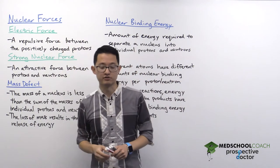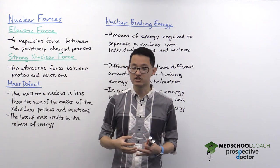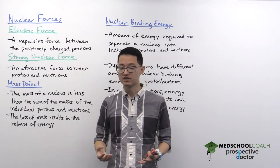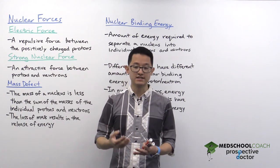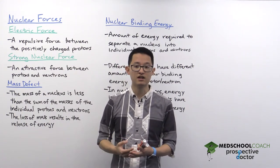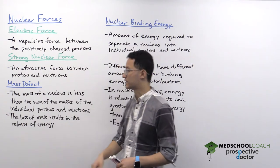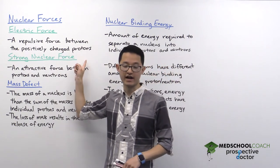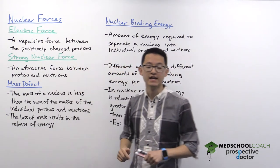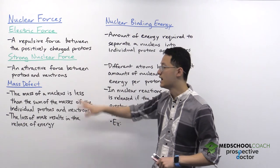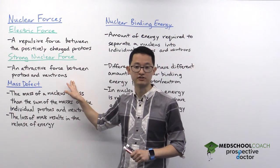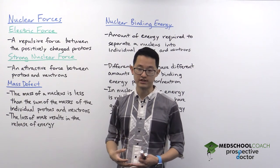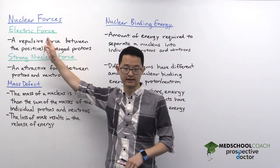Because the electric force is repulsive, this interaction is actually trying to break the nucleus apart. So if we're able to form stable nuclei, there must be another force that is attractive — and that force is the strong nuclear force. You don't need to know much about how it works for the MCAT, but you should know it's an attractive force between protons and neutrons, and in stable nuclei it is stronger than the electric force.